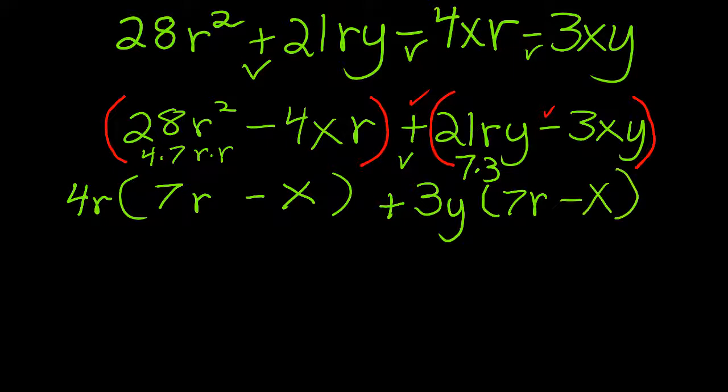And you can always double check yourself at this point by distributing, in your head, distributing. 4r times 7r is 28r². And 4r times x is 4xr. 3y times 7r is 21ry. And 3y times x is 3xy. All right, that's correct. That's what I started with.